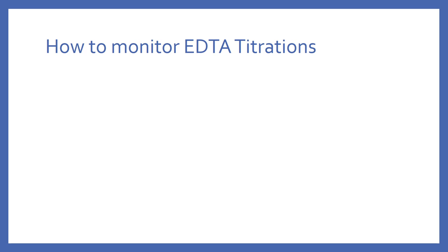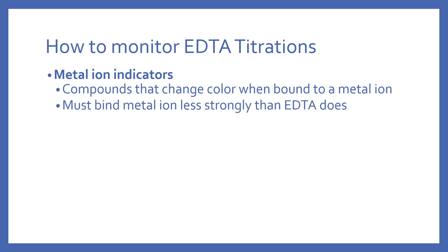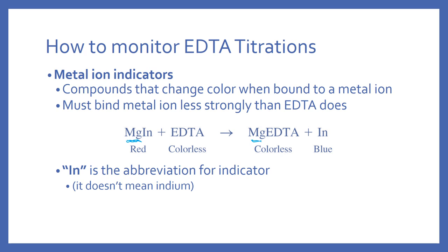To monitor EDTA titrations, you can use potentiometry or metal ion indicators. Metal ion indicators are compounds that change color when bound to the metal ion. The metal ion indicator must bind the metal less strongly than EDTA does — you want the indicator to give the metal over to EDTA. For example, with magnesium: if the indicator is red when bound, you add the EDTA, the magnesium goes with the EDTA, and you get the free indicator. The indicator, originally bound to the metal, becomes free and changes color when EDTA displaces it. IN is the abbreviation for indicator — not the element indium.